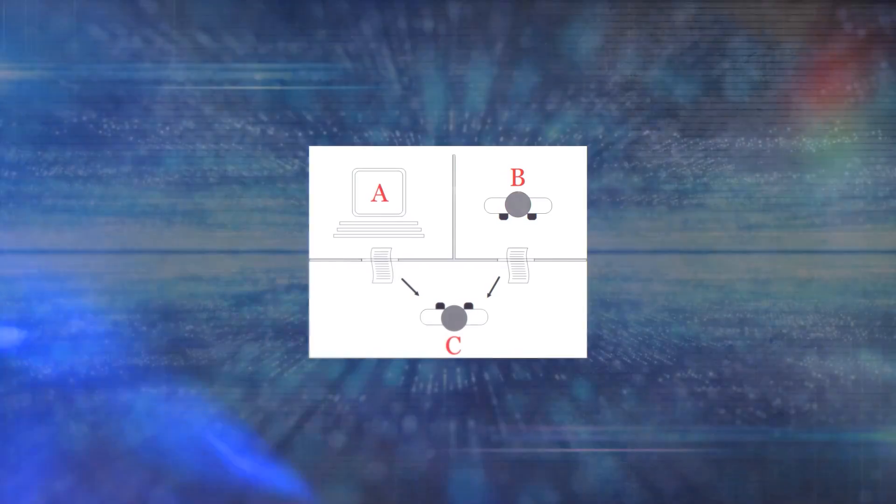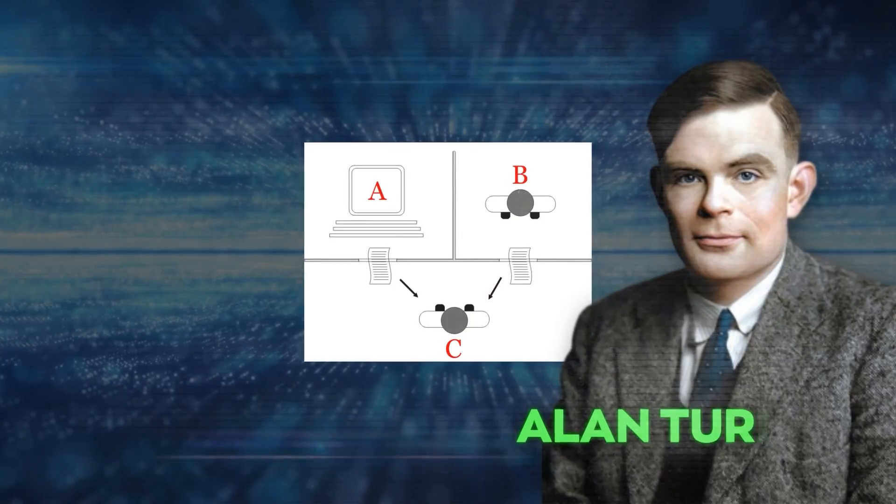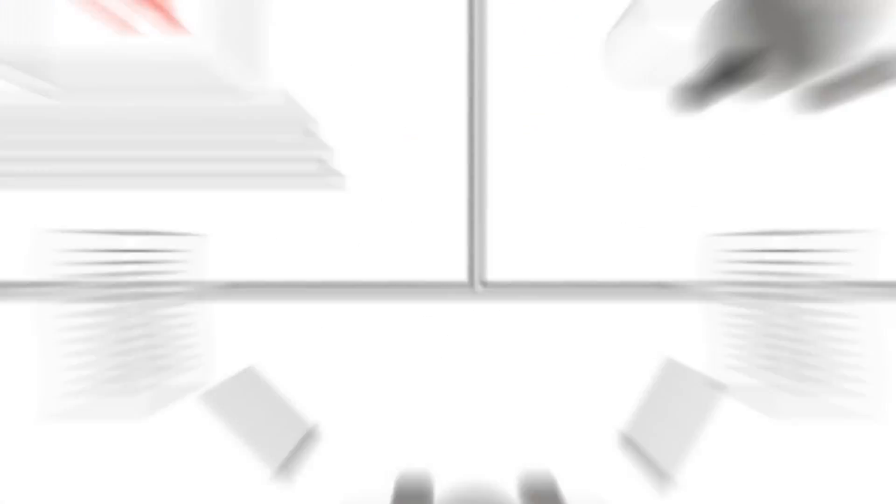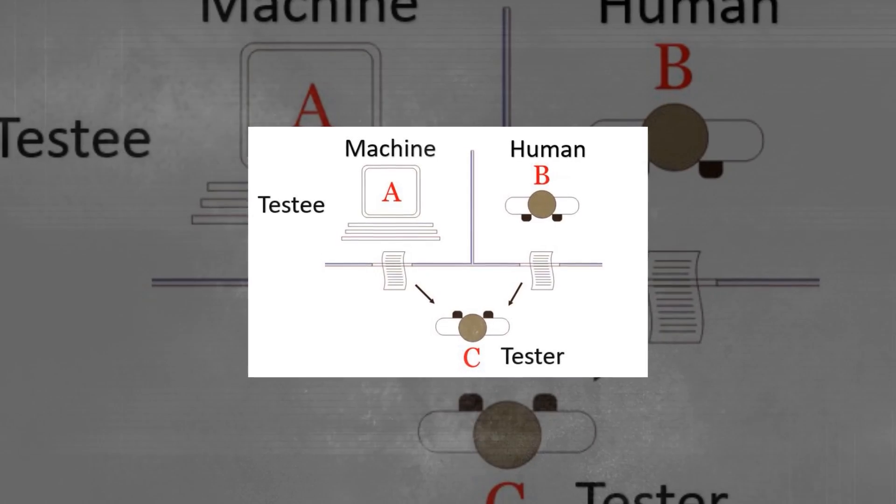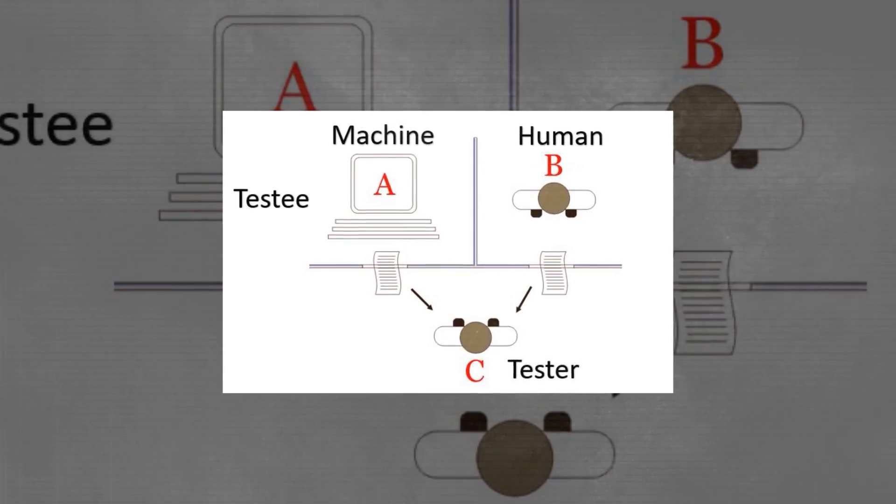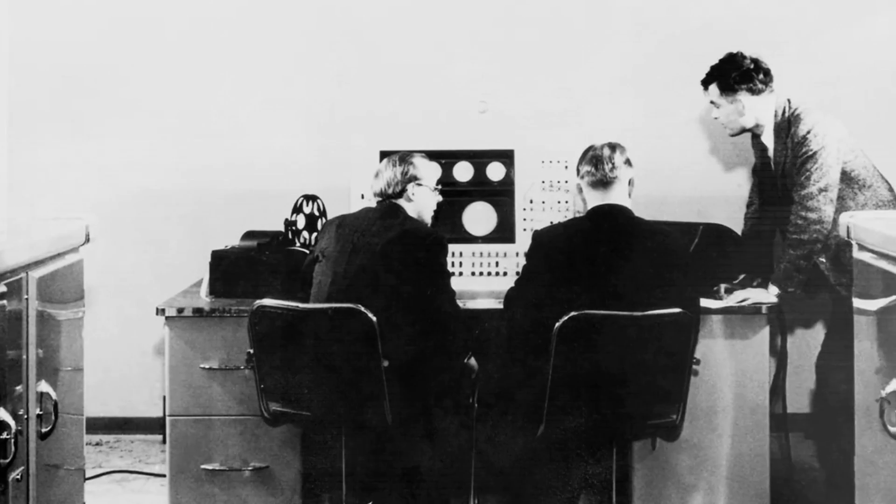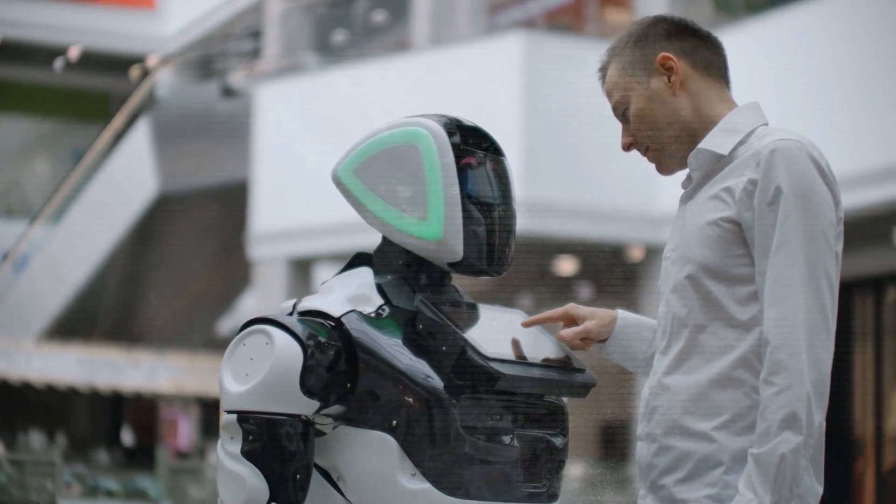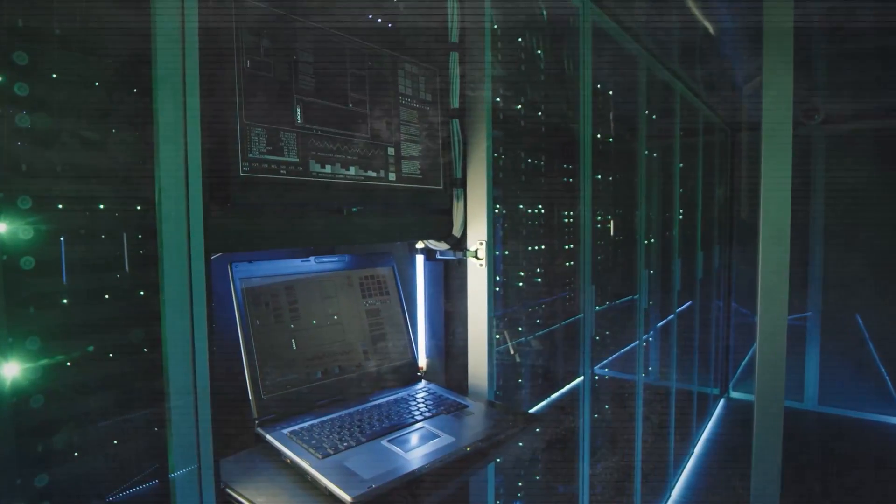The Turing test, introduced by Alan Turing in 1950, is a famous way to check if machines can think. The test involves a human judge having a text chat with a hidden computer and another human. The goal is to see if the judge can tell who's the machine. But there's a debate on how exactly to use the Turing test.